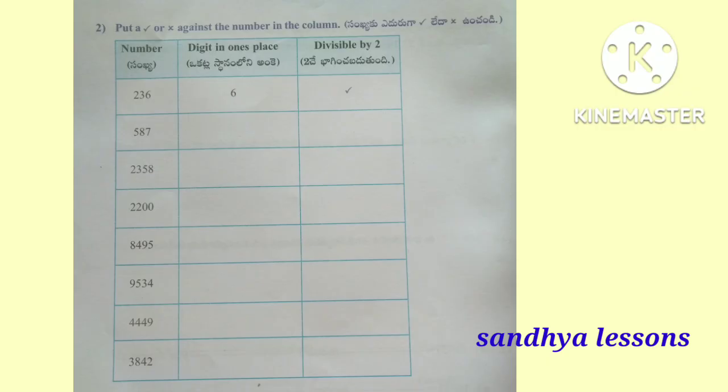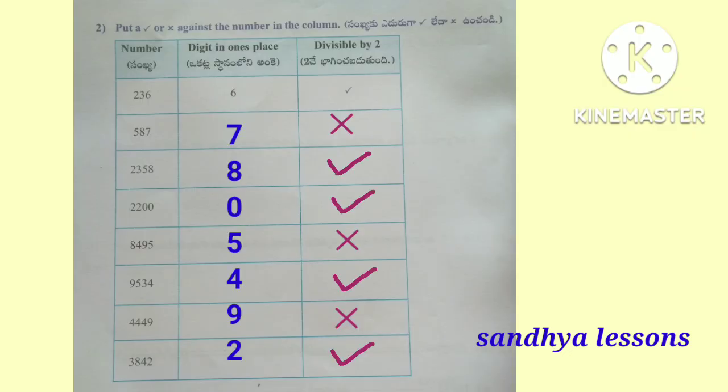Second Roman: Put a right or wrong against the number in the column. In the table form, a number is given and we should recognize the digit in the ones place and whether the number is divisible by 2 or not.